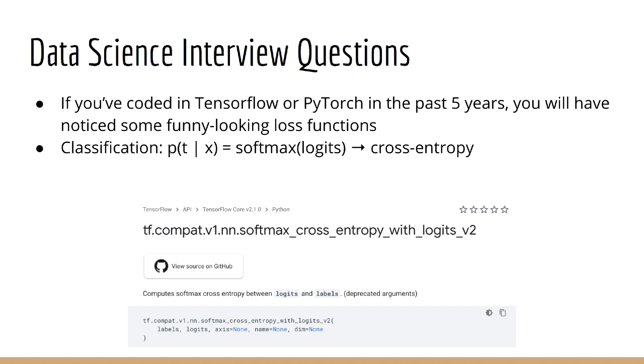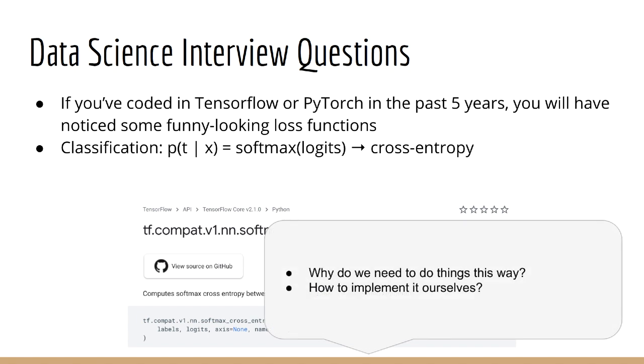So your data science interview question of the day is: why do we need to do things this way? And if we do, how do we implement something like this ourselves? What are the relevant equations? How do we compute the cross entropy from the logits without having to explicitly do a softmax?